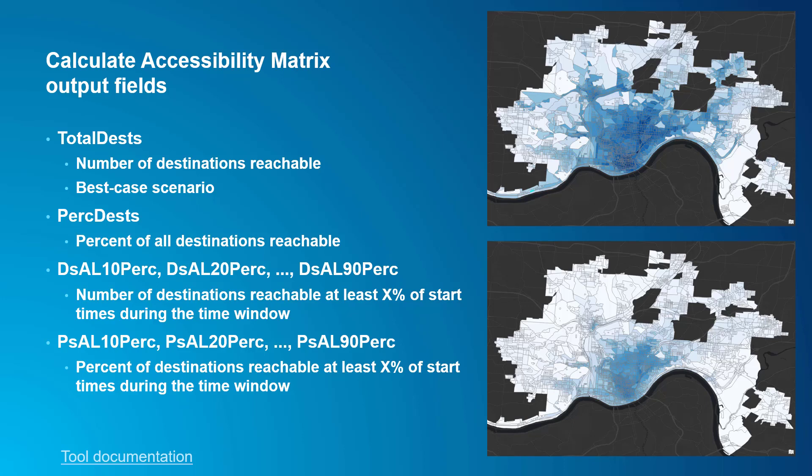These other fields help distinguish between destinations that are reliably or frequently reachable and those that are only reachable some of the time or infrequently. DSAL 10-perk through DSAL 90-perk represent the total number of destinations reachable by a given origin within the time limit at least some percentage of start times within the time window. The number in the field name — 10, 20, up to 90 — is the threshold percentage of start times. Together, these fields allow you to understand the frequency of access the origins have to destinations. So DSAL 70-perk shows the number of destinations reachable by the origin at least 70% of start times.